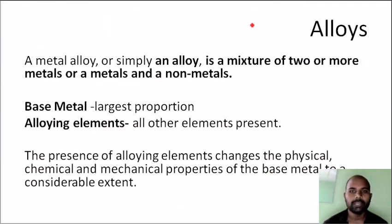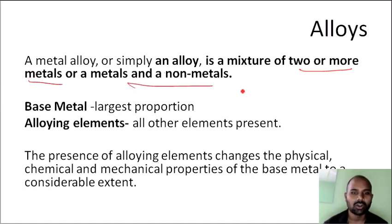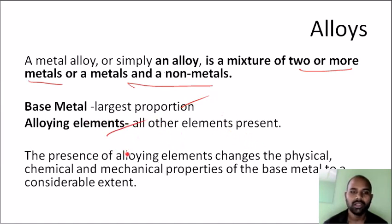Now, the definition of alloying: an alloy is a mixture of two or more metals, or metals and non-metals. The largest portion is the base metal, and the smallest portion is the alloying elements. If we add alloying elements, we will change the physical properties, chemical properties, and mechanical properties — increasing or decreasing them. We use alloying to maximize the desired properties.